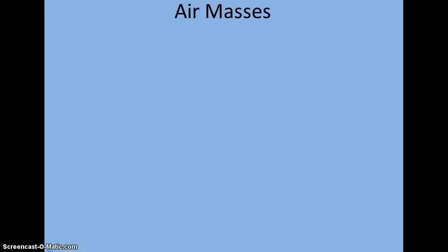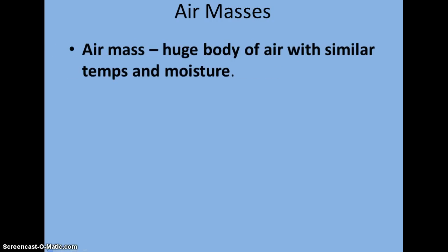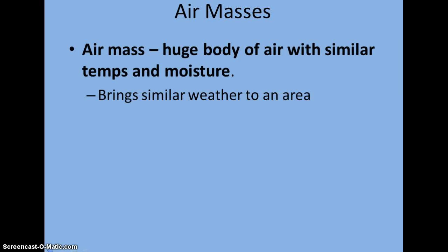We just got done talking about air pressure. The thing with air pressure is we see the movement of these large air masses, and these air masses help influence the pressure in a certain area. Because of the differences in pressures we see things like fronts and the development of our winds. An air mass is just a huge body of air that has a similar temperature and moisture to the air around it, bringing similar weather to a certain area — whether that be a bright sunny day or cold and dreary — and as these large air masses move into a region they are going to bring weather that lasts for several days.